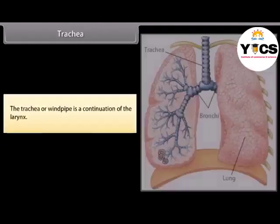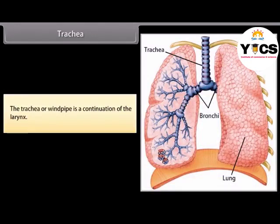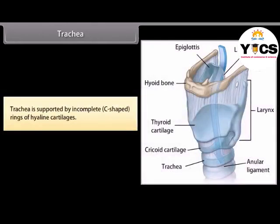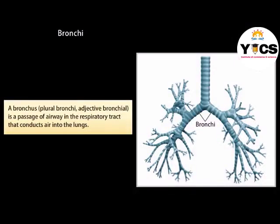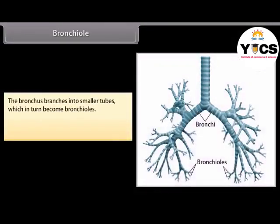The trachea or windpipe is a continuation of the larynx, supported by incomplete C-shaped rings of hyaline cartilage. The mucosa of the trachea is lined with ciliated pseudo-stratified epithelium containing mucus-secreting goblet cells, which help in pushing mucus out. A bronchus (plural bronchi) is a passage of airway in the respiratory tract that conducts air into the lungs. The bronchus branches into smaller tubes which in turn become bronchioles; no gas exchange takes place in this part of the lungs.